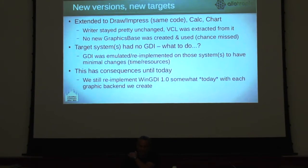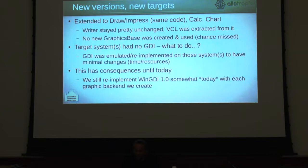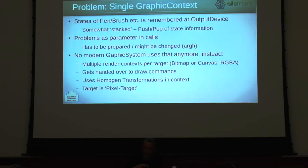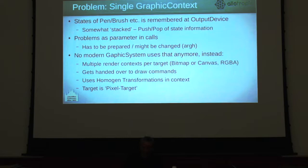Unfortunately, this has consequences until today. Even today we still re-implement a kind of WinGDI 1.0-similar behavior when we write new backends. For example, single graphic context — the state of paintbrush, which most of you know. We have somewhat stacked stuff with push and pop, but still the problem in parameter calls. There are different parts of the office which use different conventions for what you need to set in the output device before or after the call, and this causes a lot of problems all through the years.